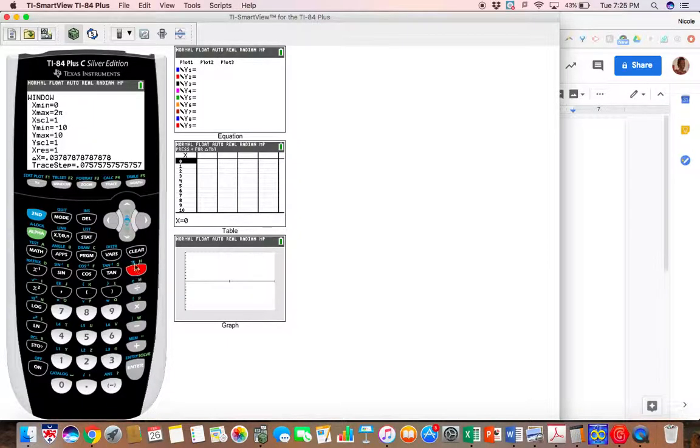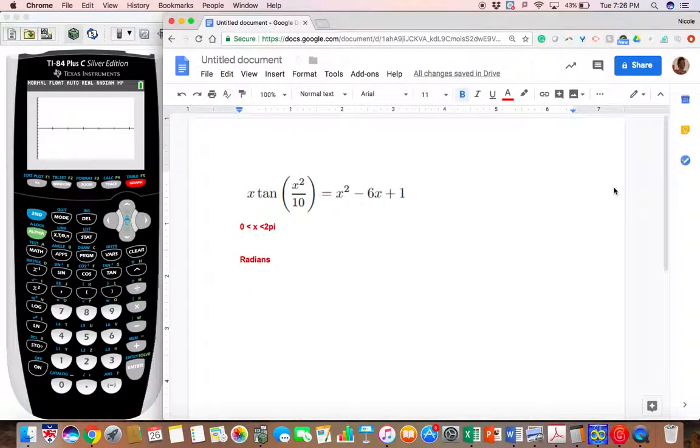I think negative ten to ten is a good window for the y-axis. We're not going to have anything to graph yet—as you can see it's empty—but this is the area of the coordinate plane that we'll be focusing on when we are looking for our solutions.